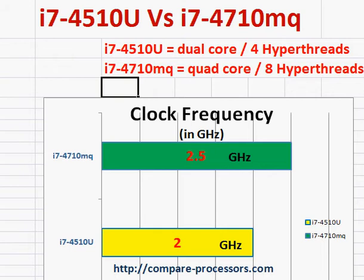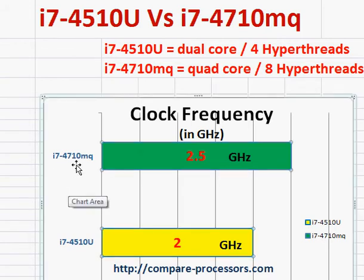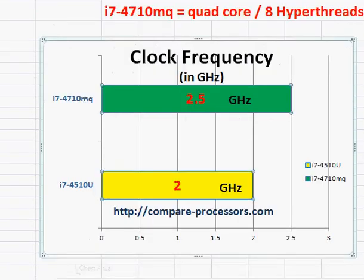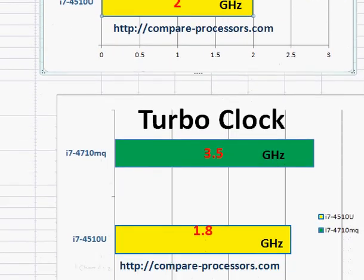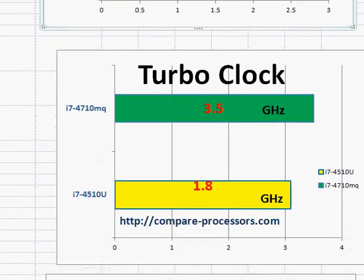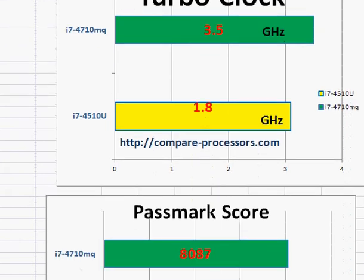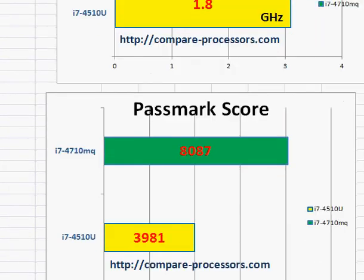It's not just the number of cores. We also see that the base clock frequency for the 4710MQ is higher than the base clock frequency of the 4510U. The turbo clock is also much higher in the case of the 4710MQ, and that's reflected in the benchmark score — it's almost more than double the performance.